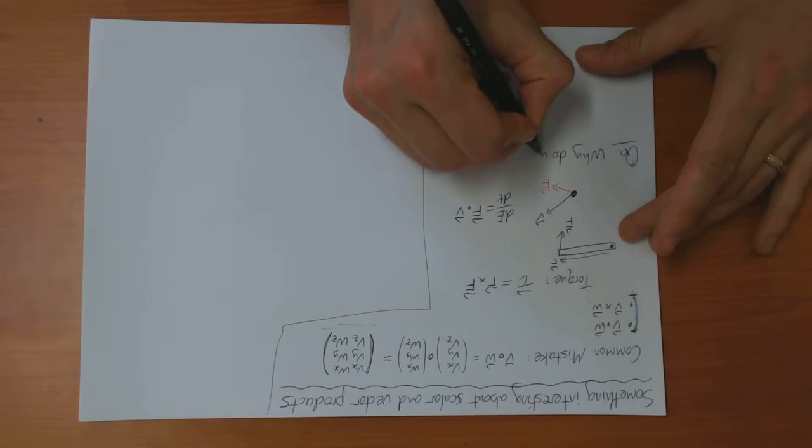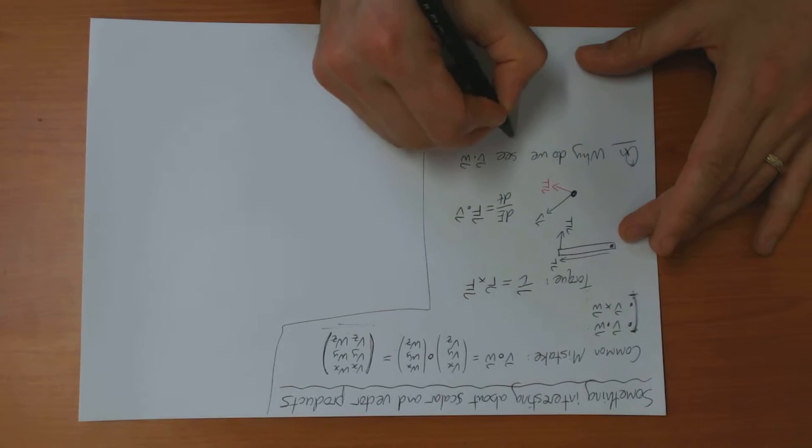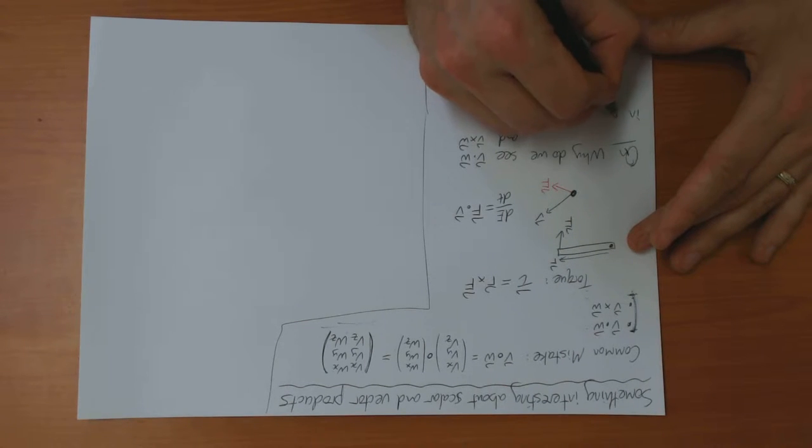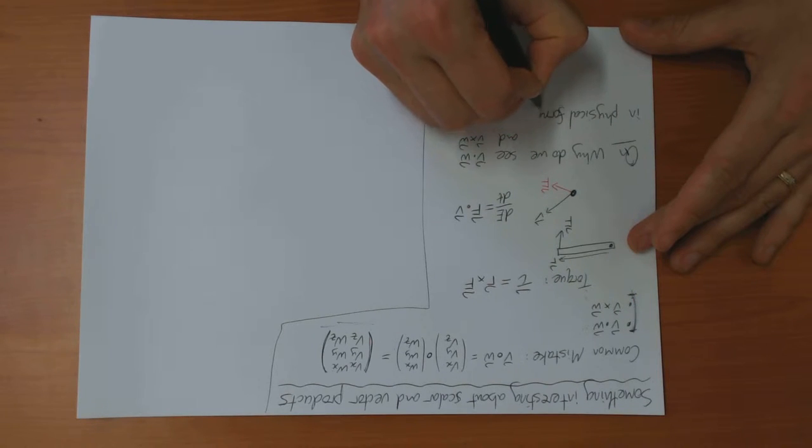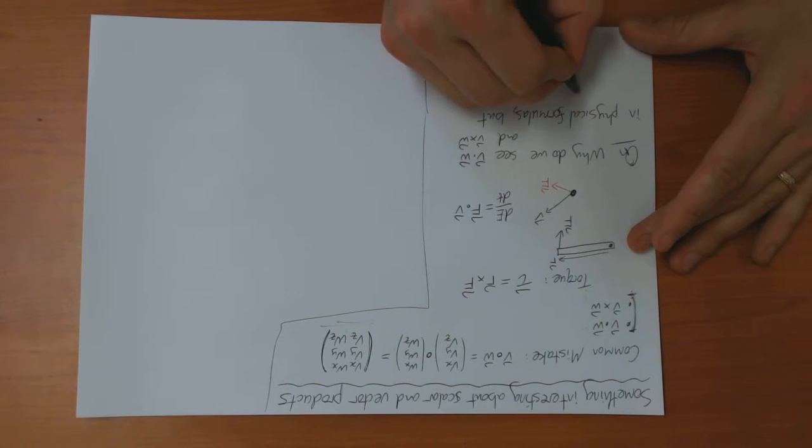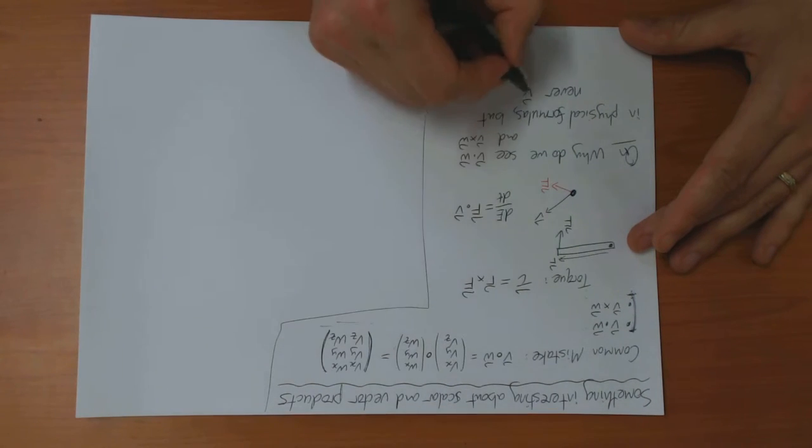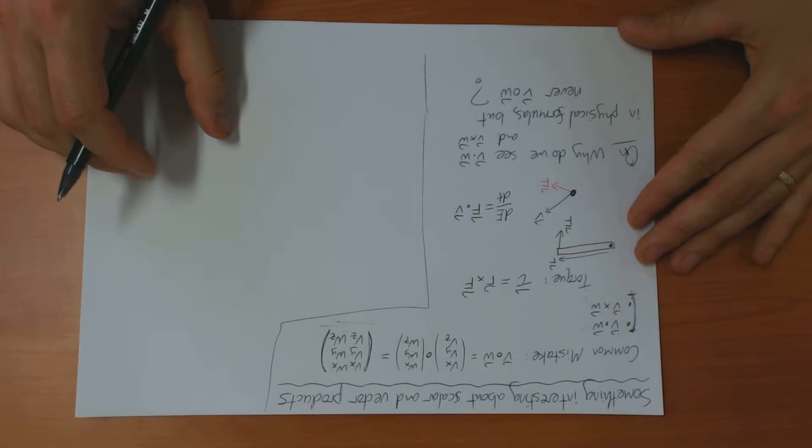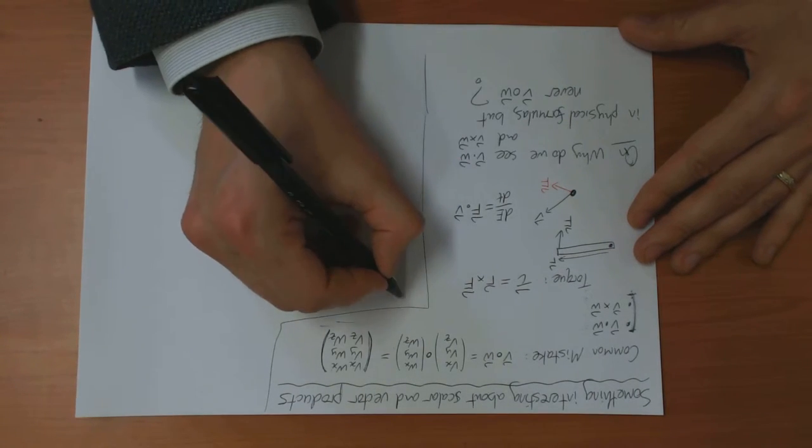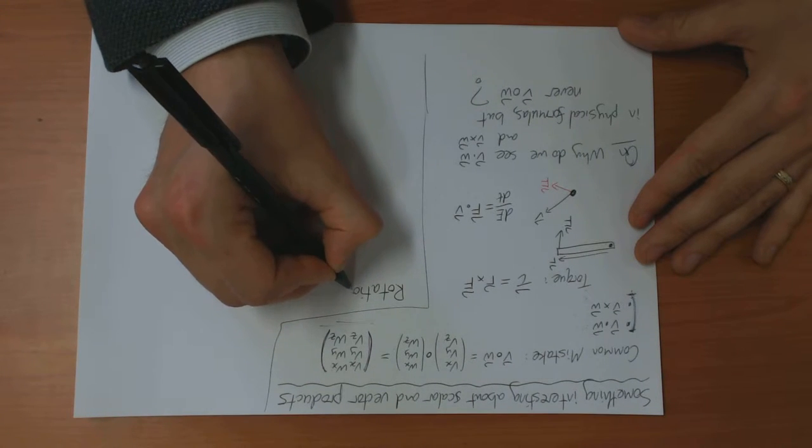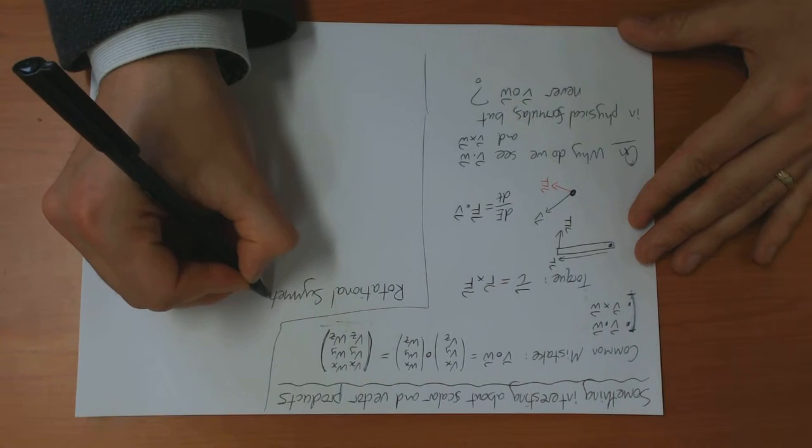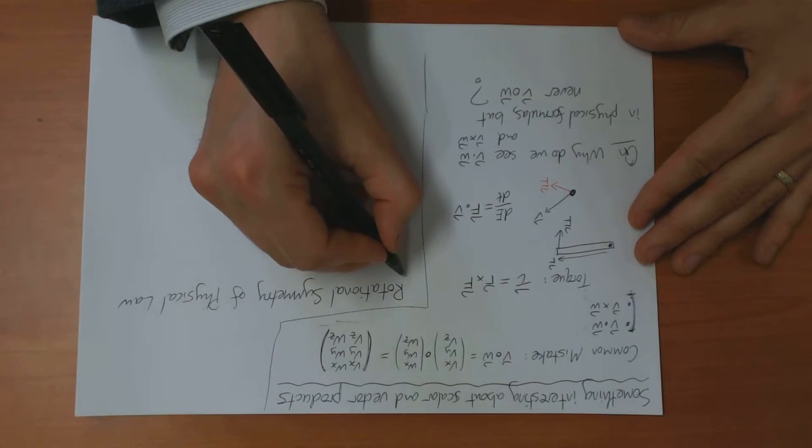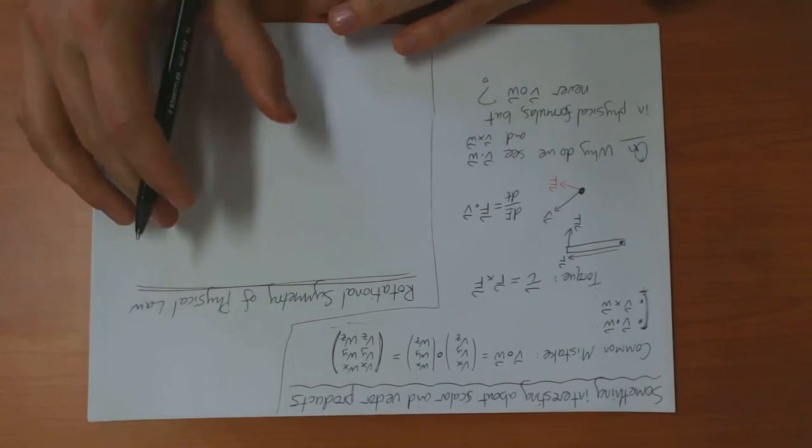Why do we see V dot W and V cross W in physical formulas? And it all comes down to something called the rotational symmetry of physical law, which sounds like a big complicated thing. It's a very simple idea.